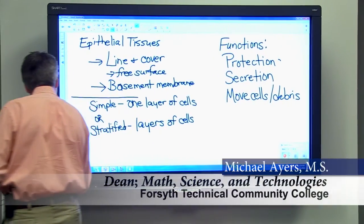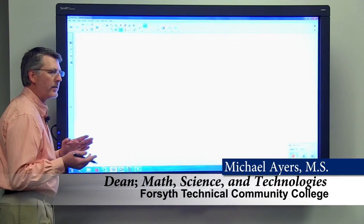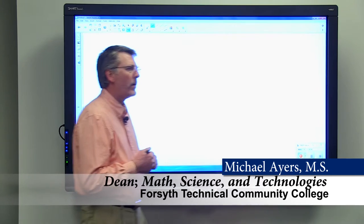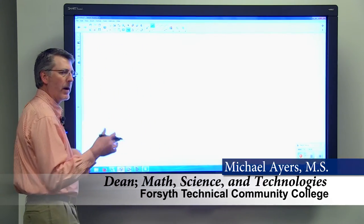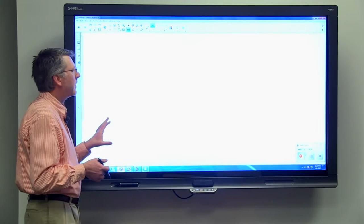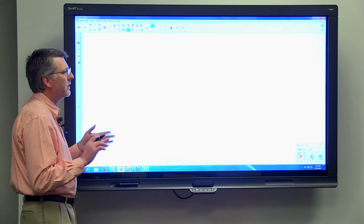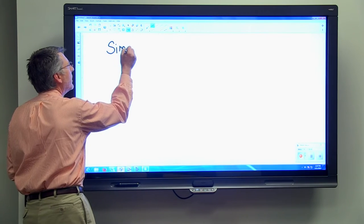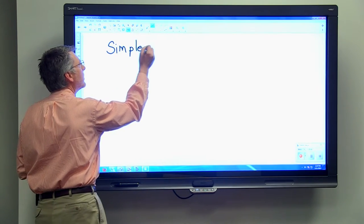So, our next chore is to look at some of the specific kinds of epithelial tissue, and we're going to consider six kinds of epithelial tissue. I'm going to write them on the board here just so you can see all six of them together, and then we'll talk about the individual ones.